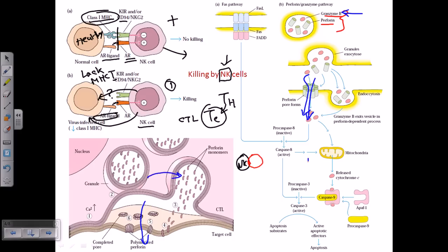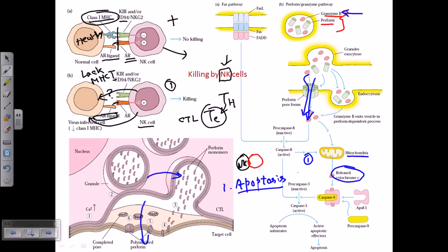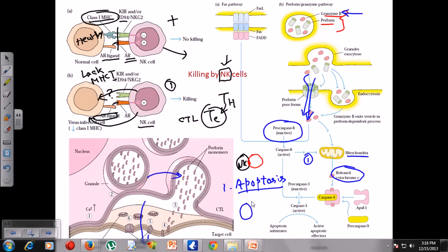Once inside, granzyme B kills the cell through two mechanisms. First, it causes the mitochondria to release cytochrome c into the cytoplasm. Cytochrome c release signals the cell to undergo apoptosis — programmed cell death. Second, granzyme B activates procaspase by cleaving its inhibitor. Normally, procaspase is inactivated by an inhibitor blocking its active site, but granzyme cleaves that inhibitor away, converting inactive procaspase into its active form.